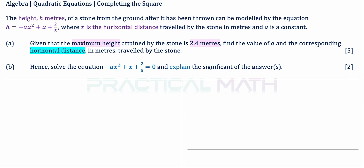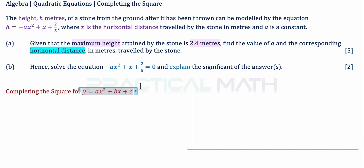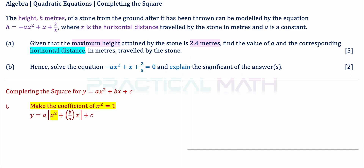Let us revise the completing the square method. For a general quadratic equation y equals ax squared plus bx plus c, the coefficient of x squared is a, the coefficient of x is b, and c is the constant. In Step 1 of completing the square, we make the coefficient of x squared within the bracket equal to 1 by factoring out a for both ax squared and bx.